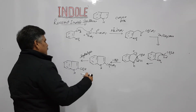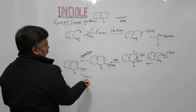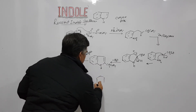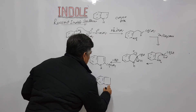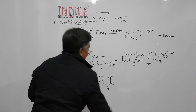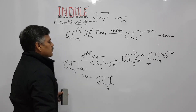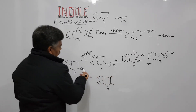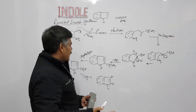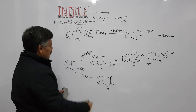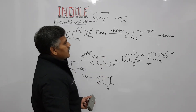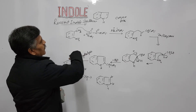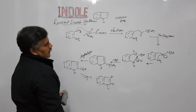Hydrolysis in basic media followed by decarboxylation gives the final product. If you hydrolyze the ester by hydrolysis, you obtain the carboxylic acid (indole-2-carboxylic acid). Subsequent decarboxylation results in the formation of unsubstituted indole. Alternatively, you can stop at the ester stage to obtain indole-2-carboxylic acid. This is Reissert indole synthesis — o-nitrotoluene is converted into indole by following this reaction sequence.